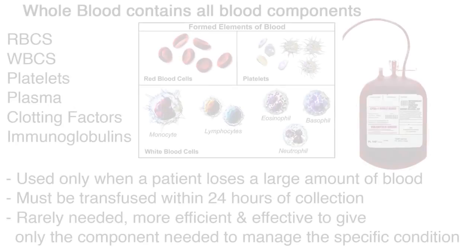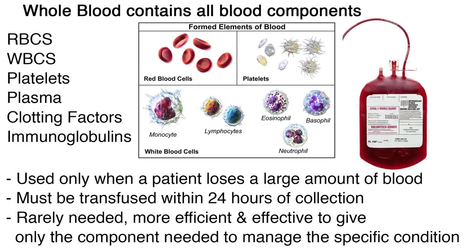First, let's talk about whole blood. Whole blood contains all blood components: red blood cells, white blood cells, and platelets, plasma (the liquid component of blood), clotting factors, and immunoglobulins. It is used only when a patient loses a large amount of blood because it has a greater effect on body fluid volume. It must be transfused within 24 hours of collection since coagulation factors deteriorate after that.